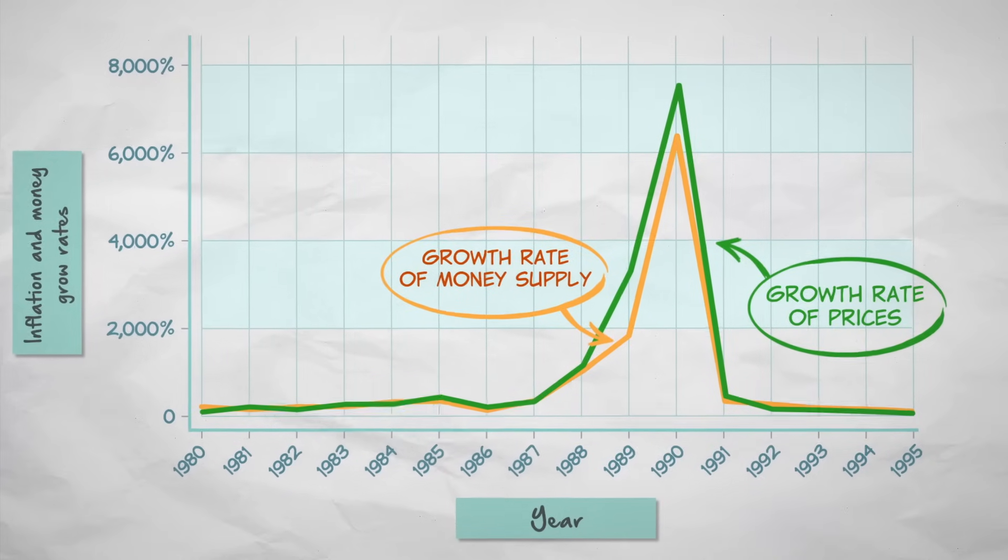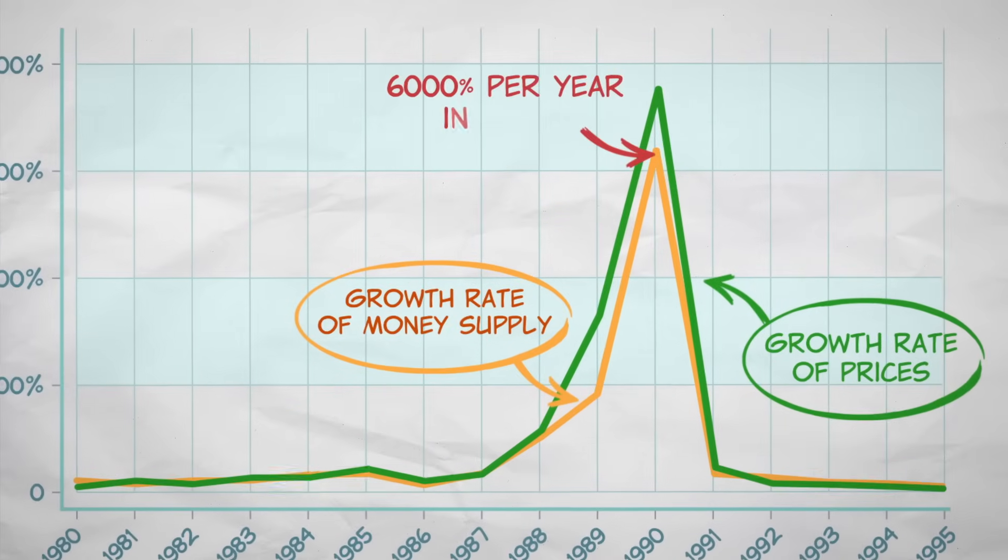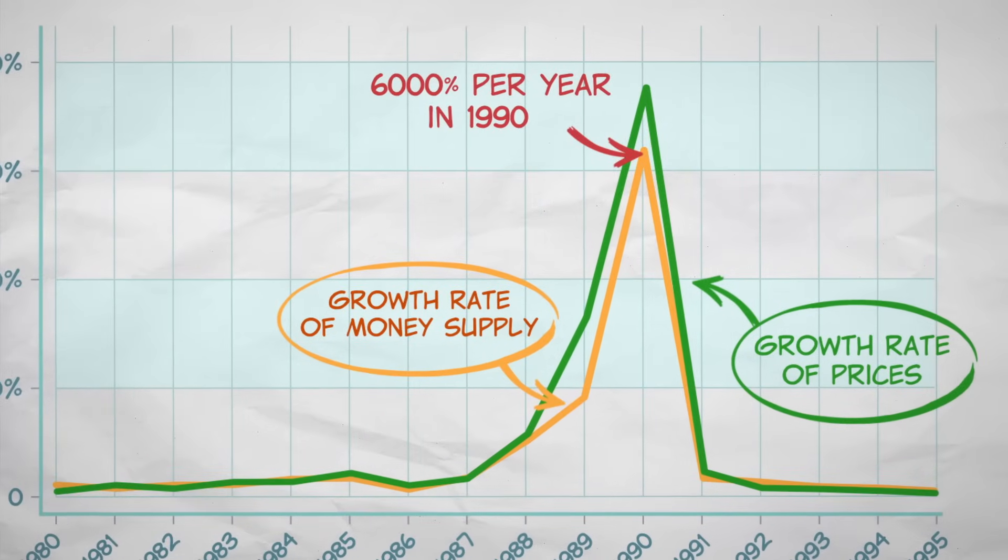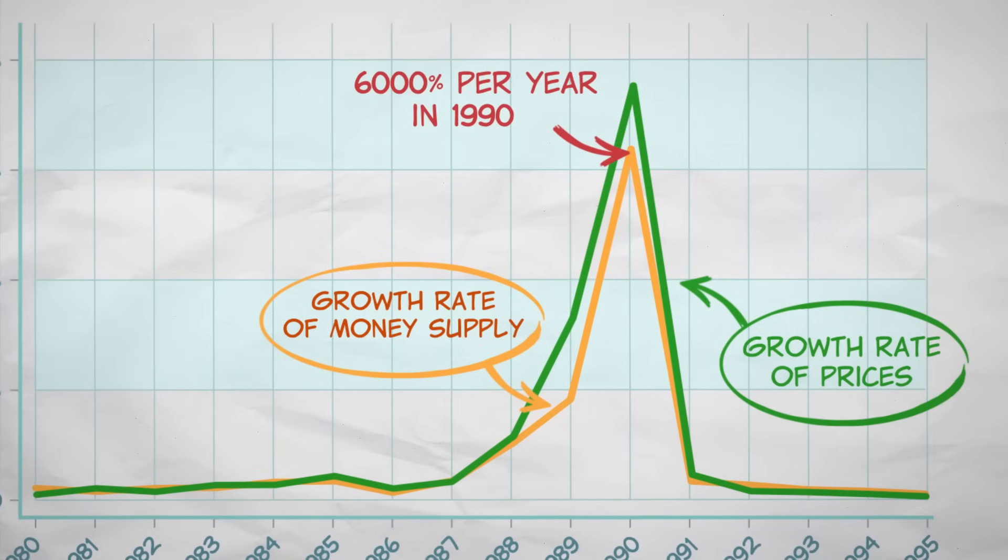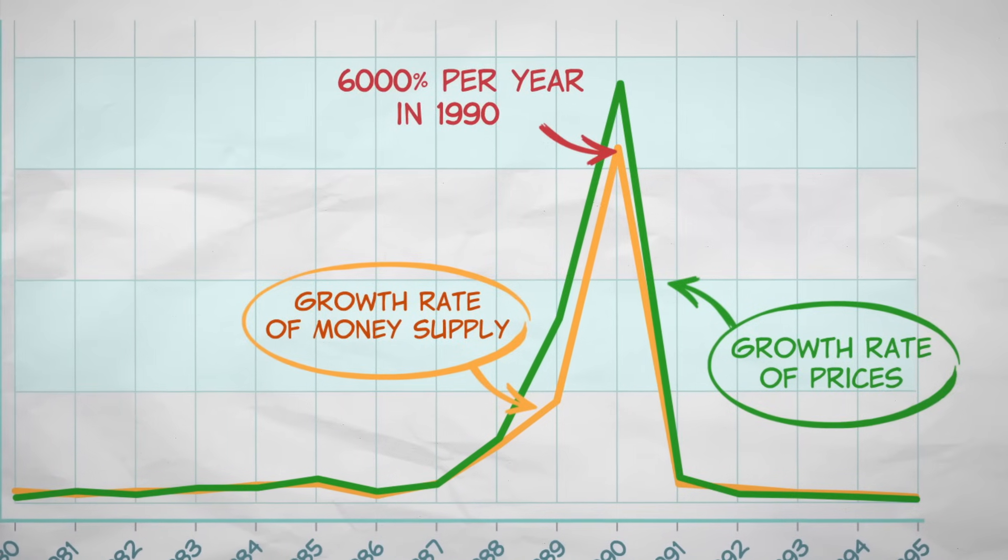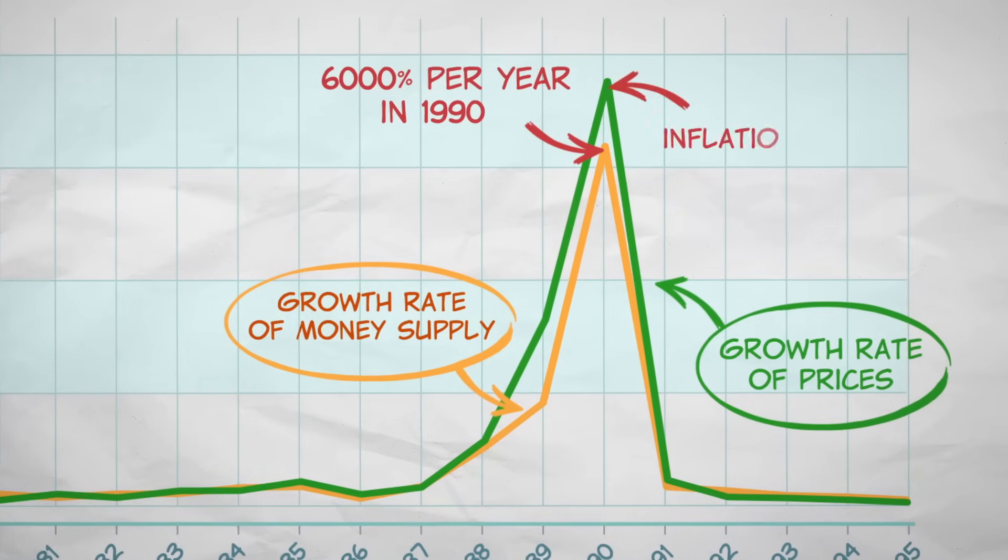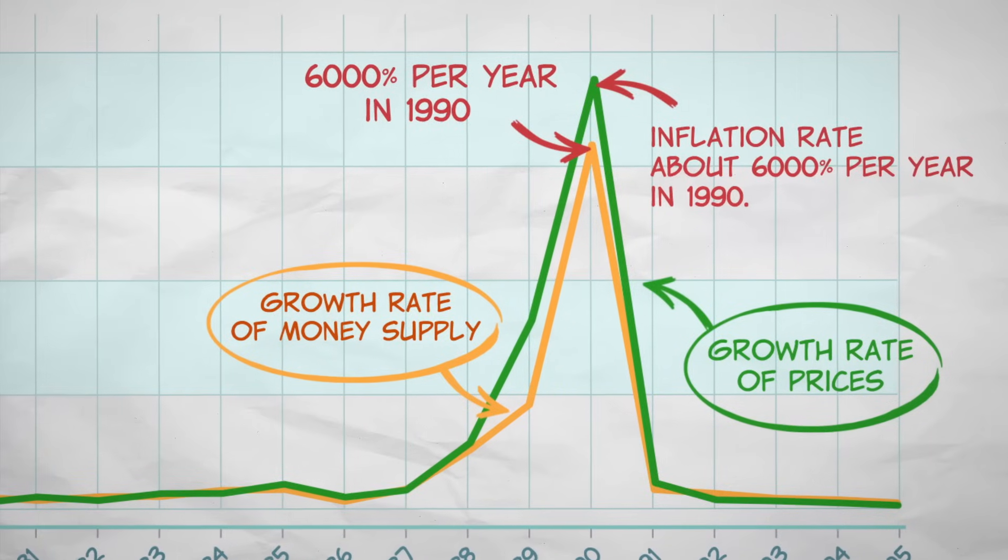Amazingly, the money supply was growing at a rate of 6,000% per year in 1990. And as the quantity theory predicts, the inflation rate was about 6,000% per year in 1990. Okay, so the theory works pretty well for Peru in 1990.